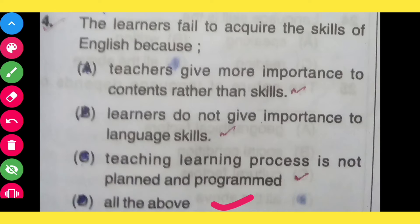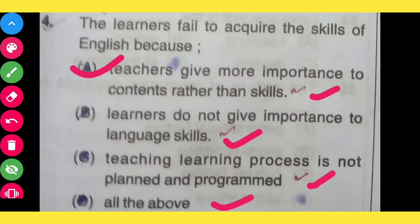The learners fail to acquire the skill of English because teachers give more importance to contents rather than skills, learners do not give importance to language skills, and teaching-learning process is not planned and programmed. All of the above is the correct answer.